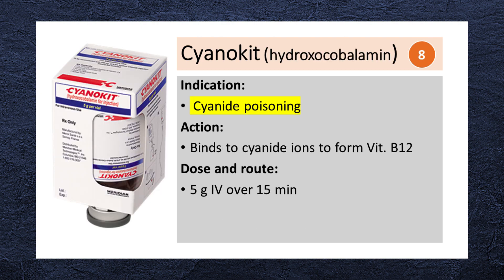Cyanokit, or hydroxocobalamin, is used as an antidote for cyanide poisoning. It works by binding to cyanide ions, forming cyanocobalamin (vitamin B12), and facilitating the excretion of cyanide from the body. The recommended dose is 5 g IV over 15 minutes.